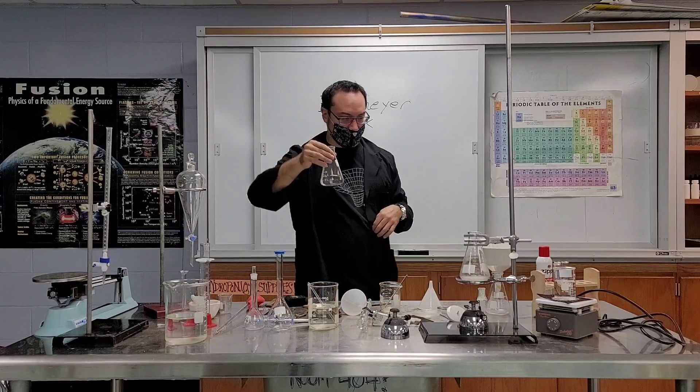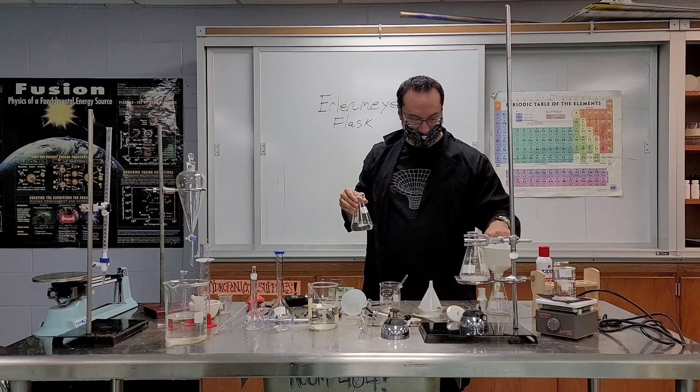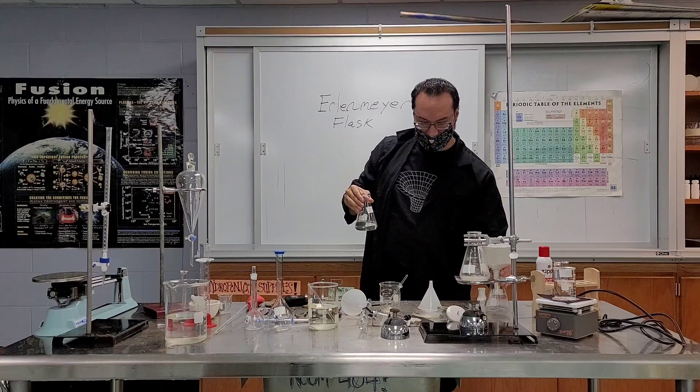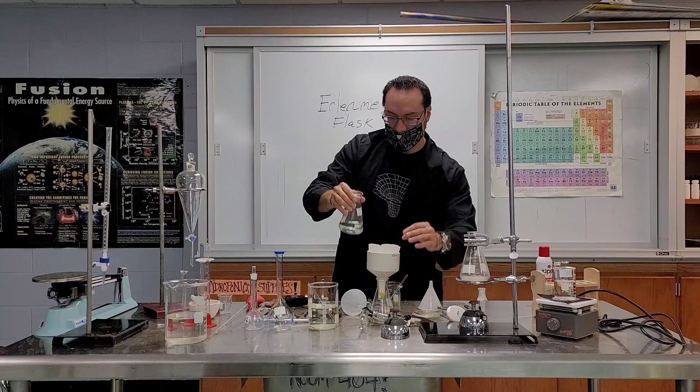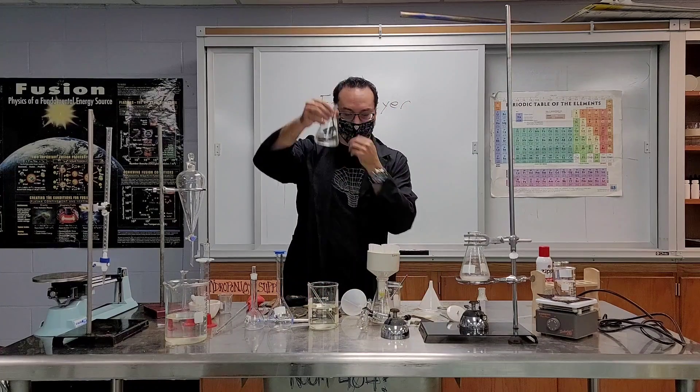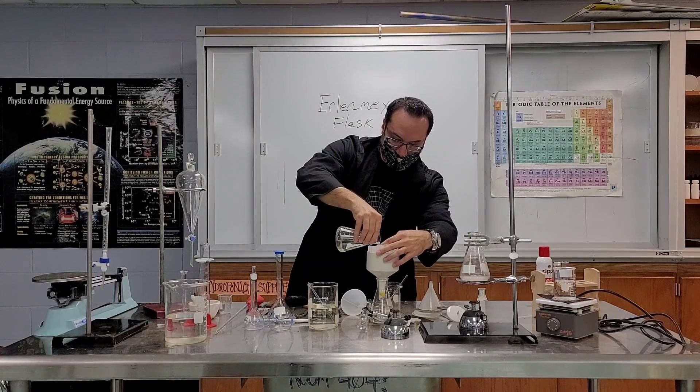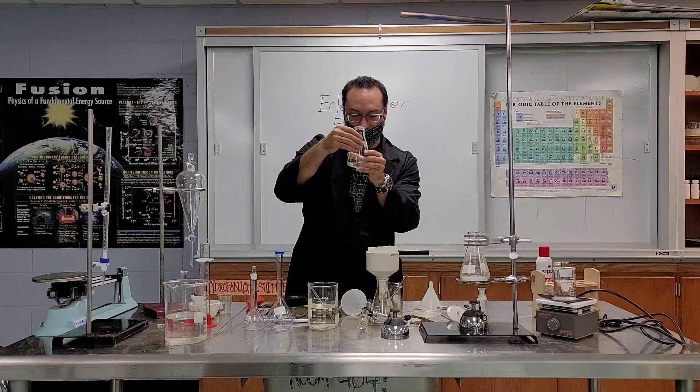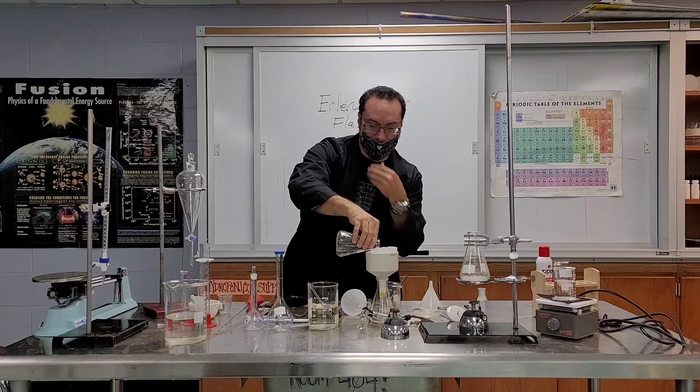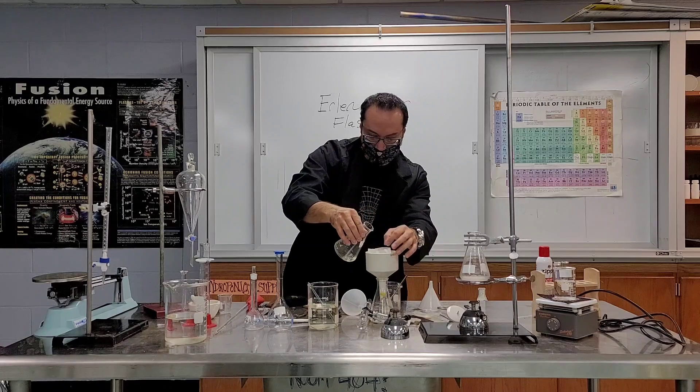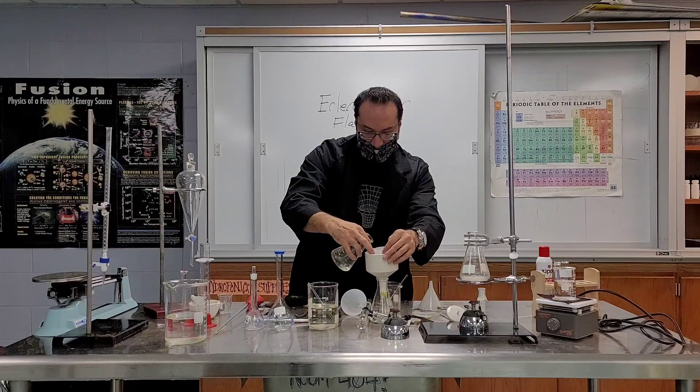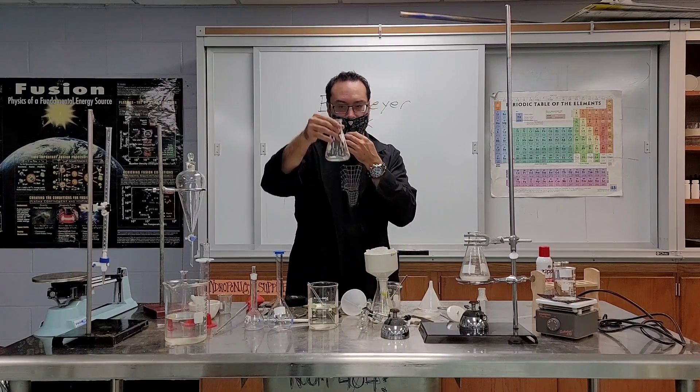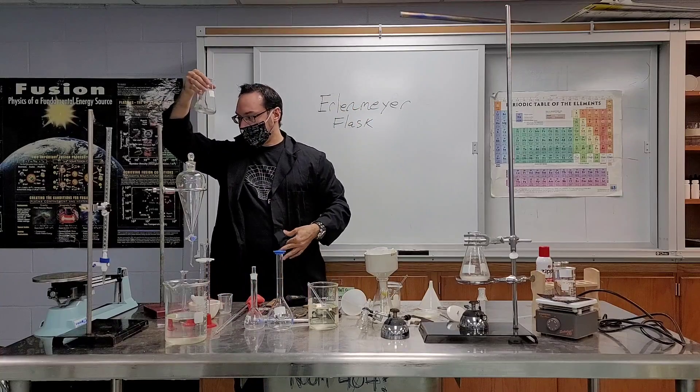They're also good for, let's say you want to filter a substance. Okay, you could, maybe there's some solid and you want to stop the solid. So flasks, because they have a small top, okay, flasks, you can actually sit a funnel on top and use that to filter. So flasks are good for mixing, swirling, filtering.